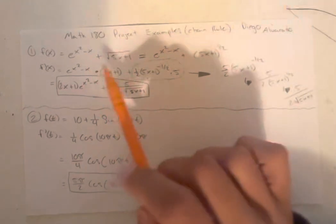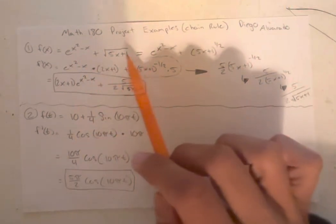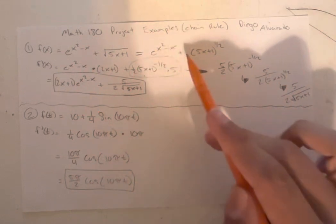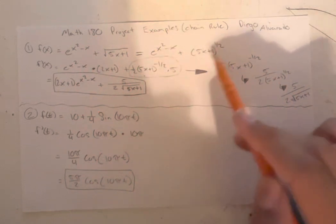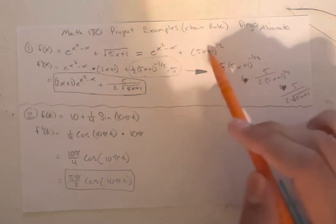So first off, we're going to rewrite this part just to make it a little bit easier. So we get this is equal to e to the x squared minus x plus 5x plus 1 to the 1 half power. And this is going to be useful when we're trying to apply chain rule.